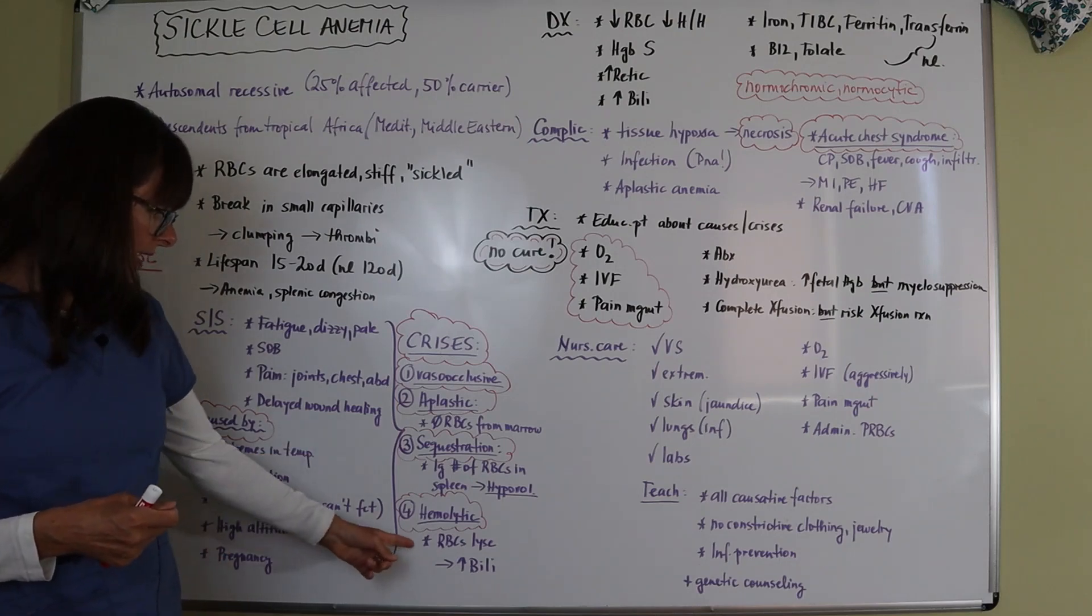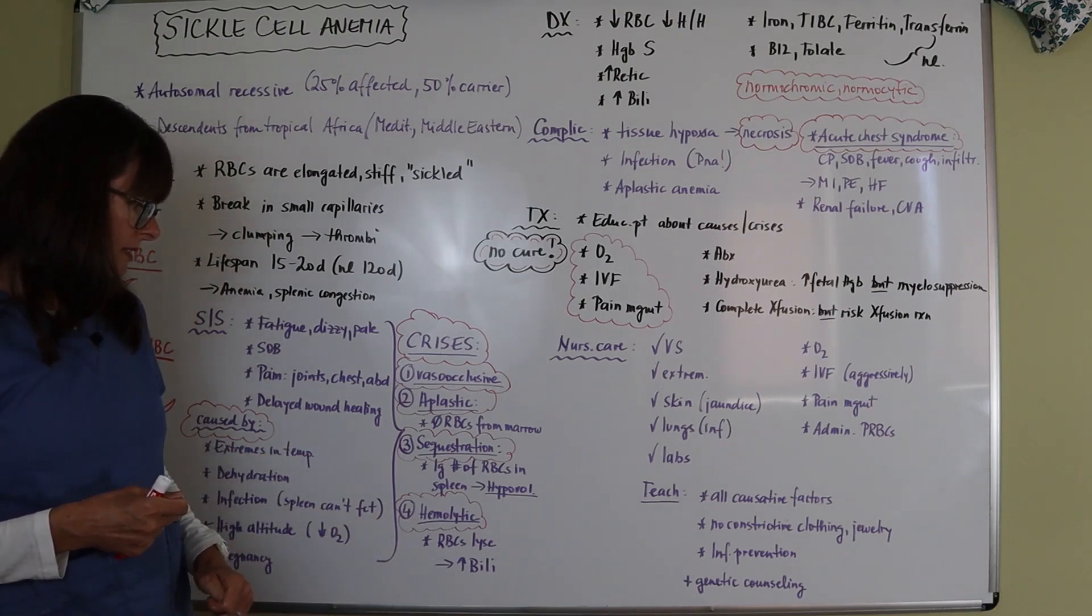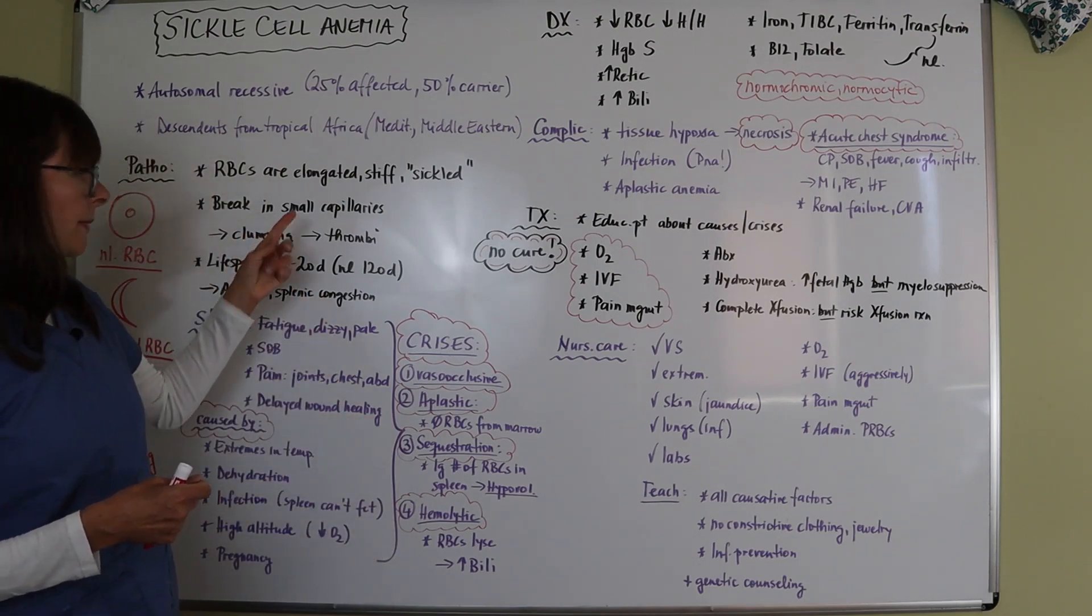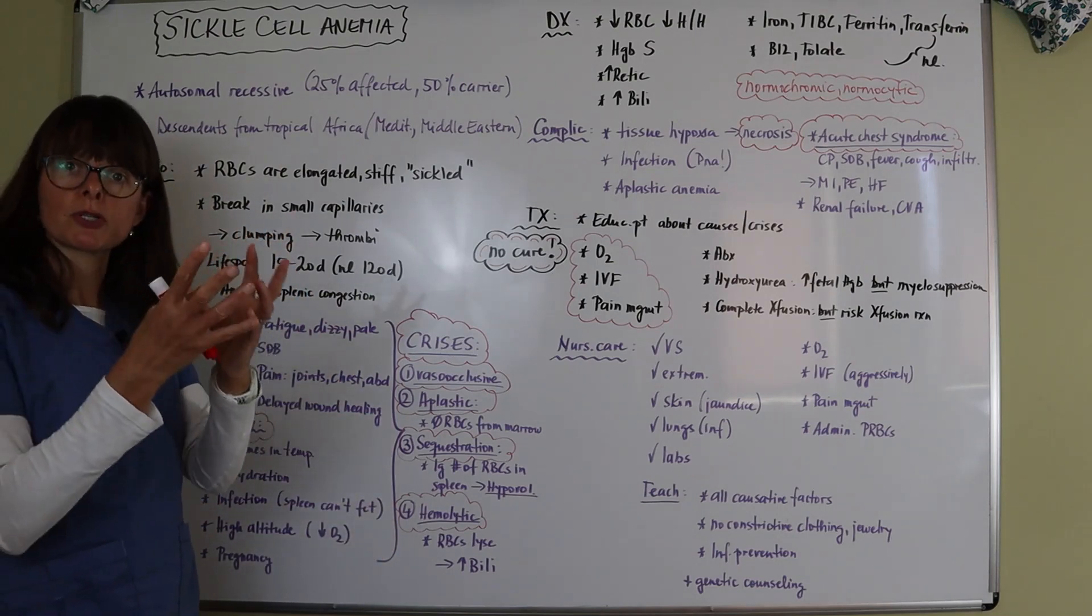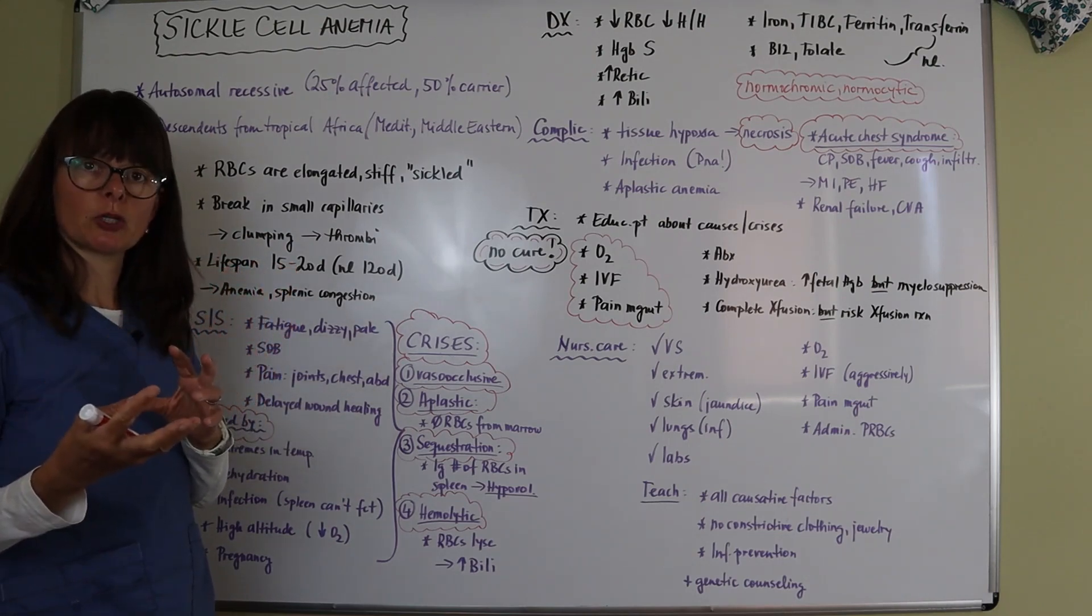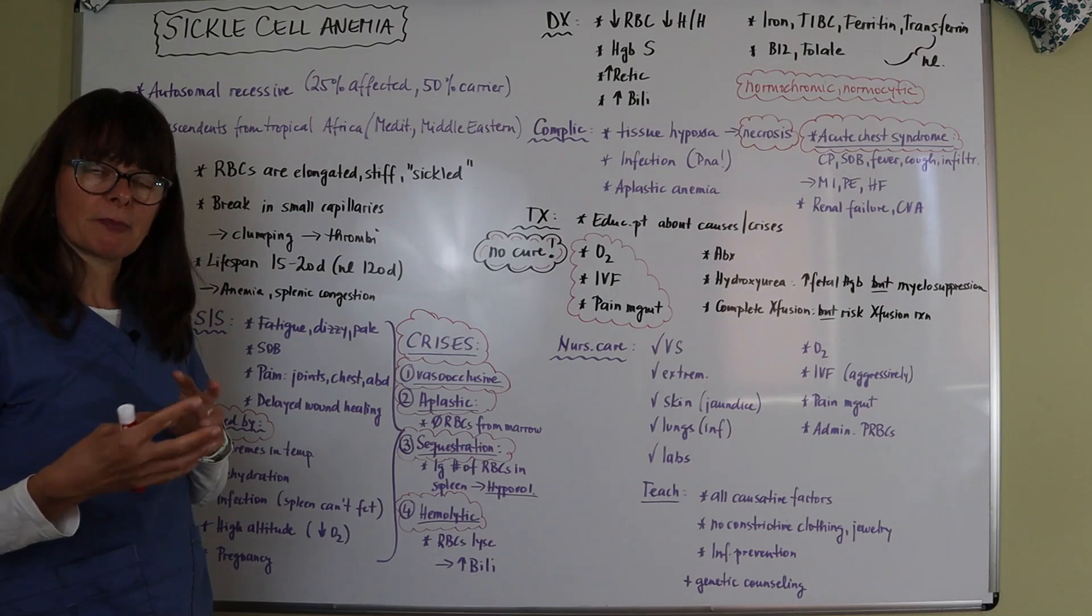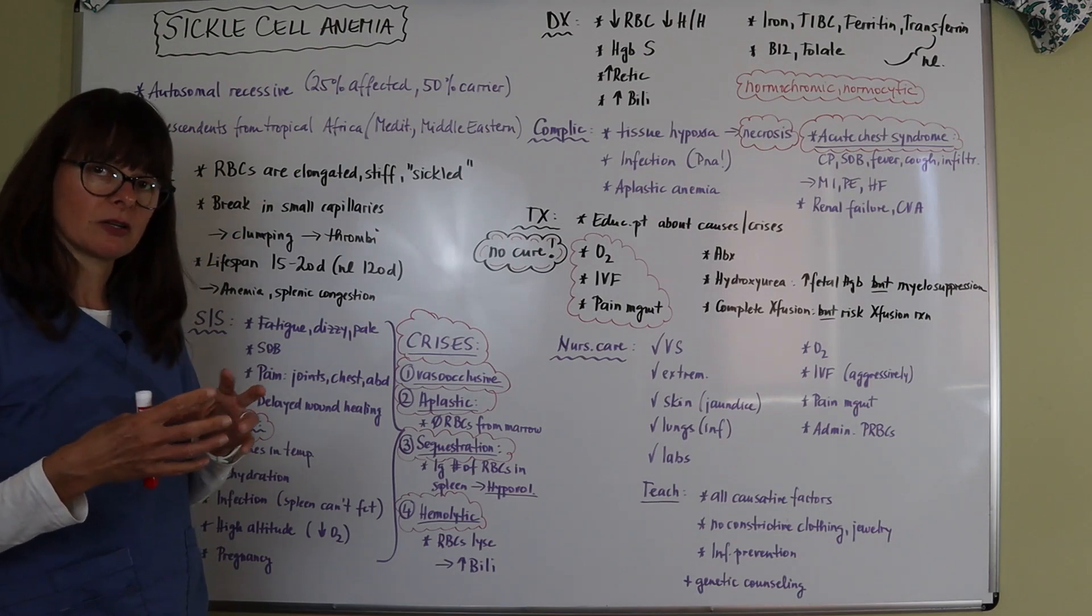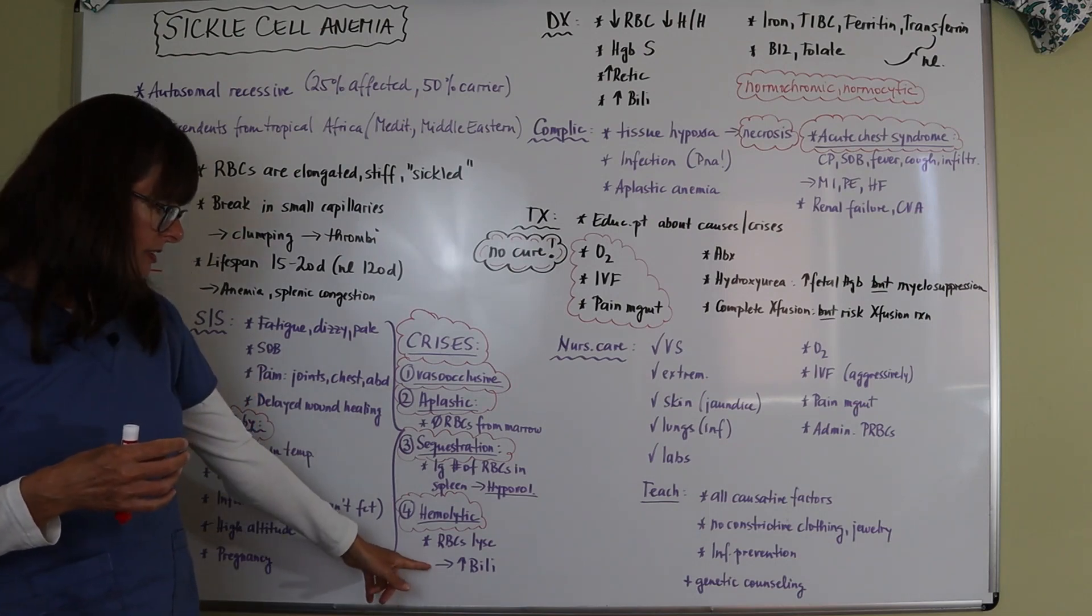And then we have the hemolytic crisis where these red blood cells break and are lysed. So they burst open, then they get transported, these fragments get transported to the liver for recycling. But now the liver is on hyperdrive trying to keep up with this demand of recycling these blood cells, and that'll increase the bilirubin.